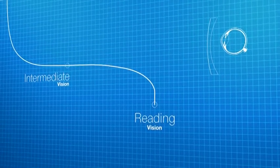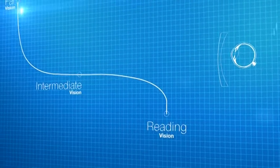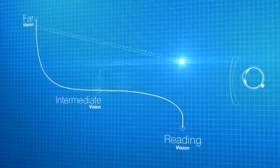In the upper part of the lens, designed for far vision, the passage of rays coming from distant objects is simulated.